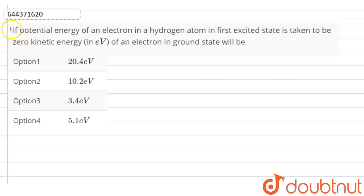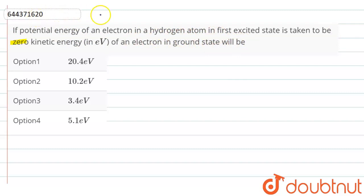In this video we are going to discuss this question: if the potential energy of an electron in a hydrogen atom in the first excited state is taken to be zero, the kinetic energy of the electron in the ground state will be — in this question it is given that if the potential energy in first excited state is zero, then we have to find the kinetic energy in the ground state.